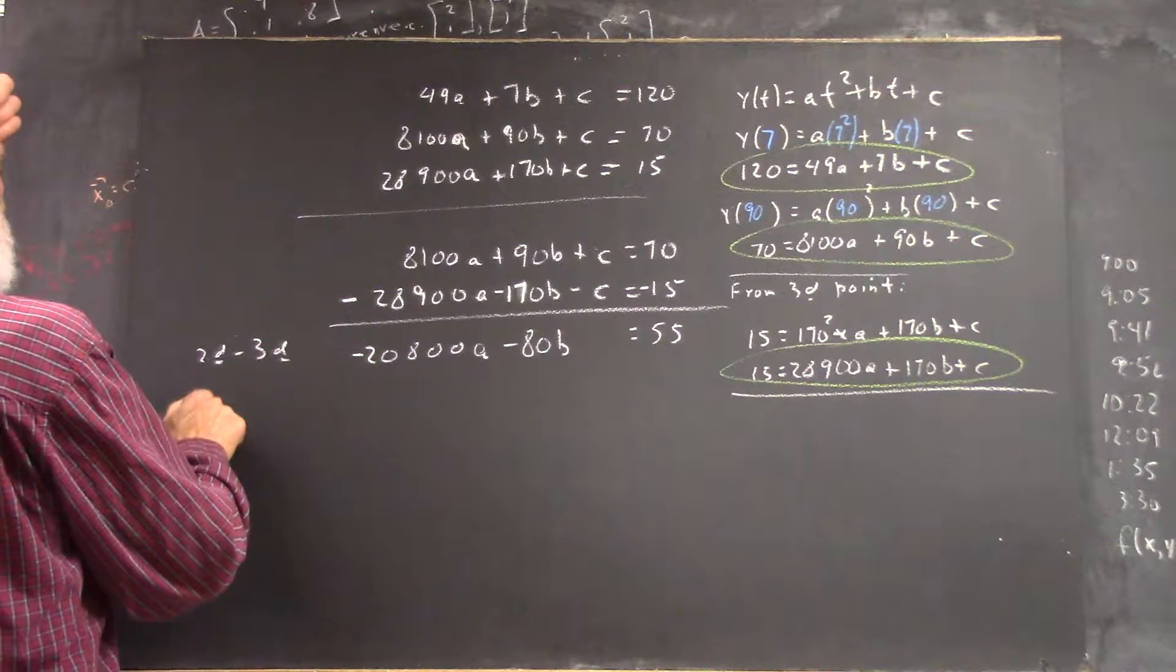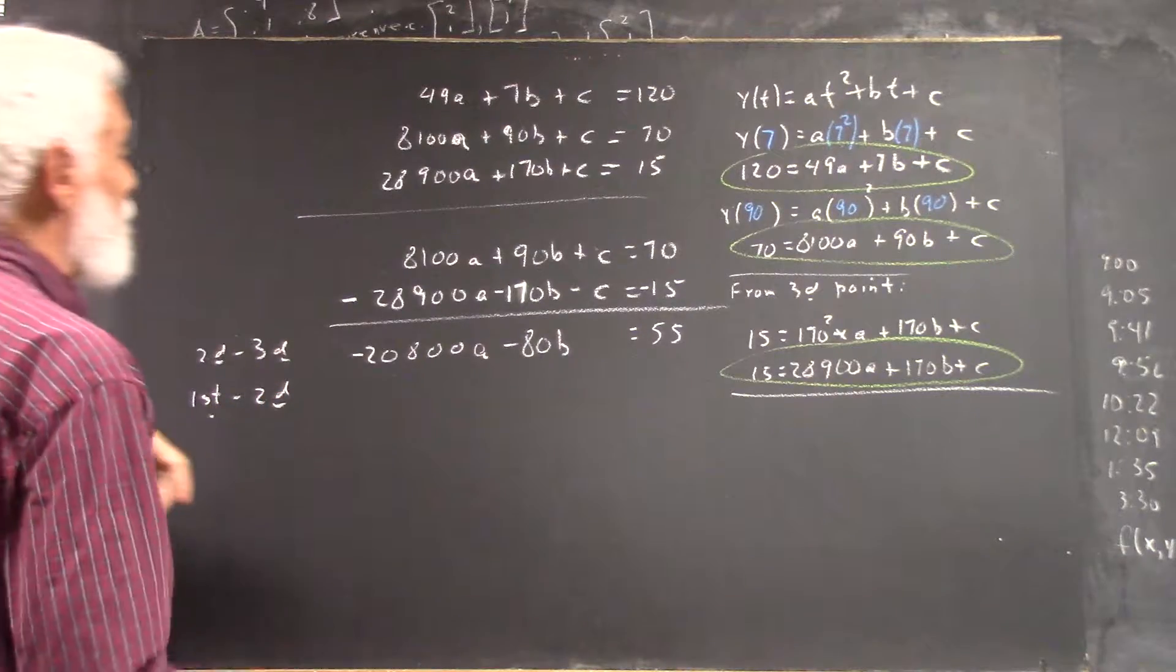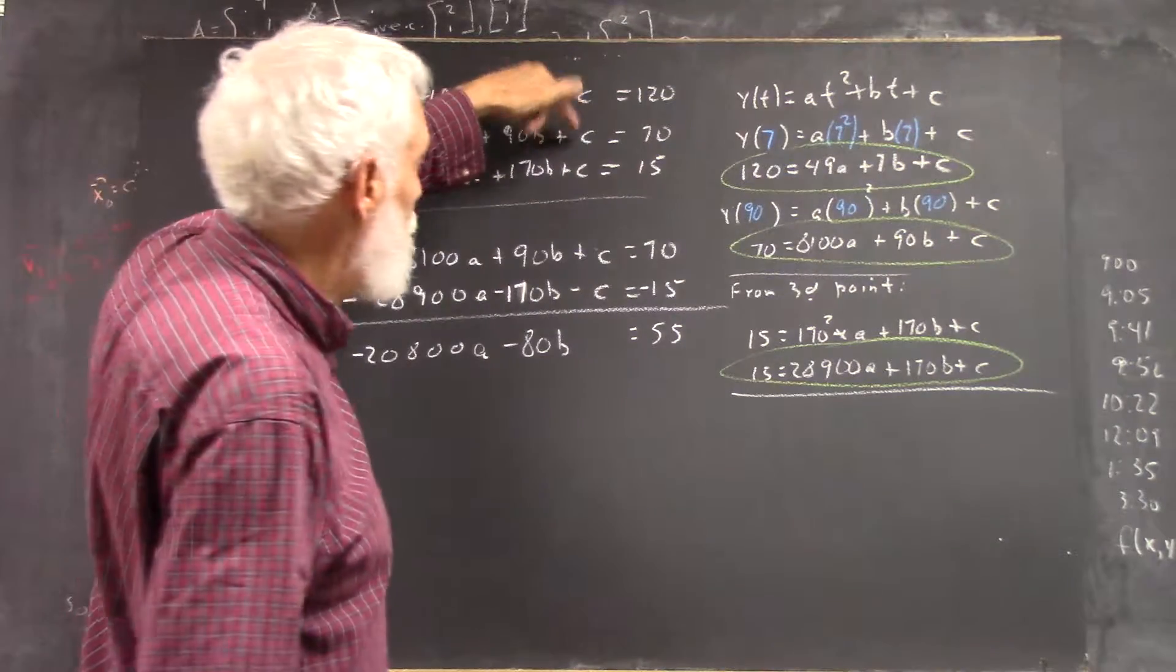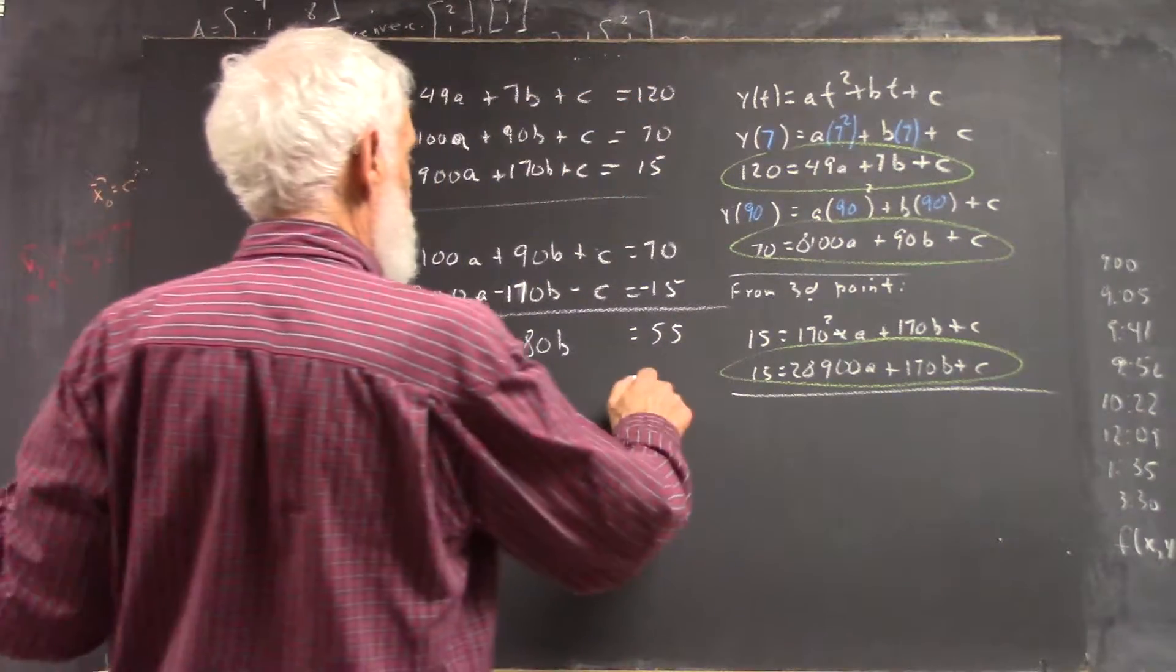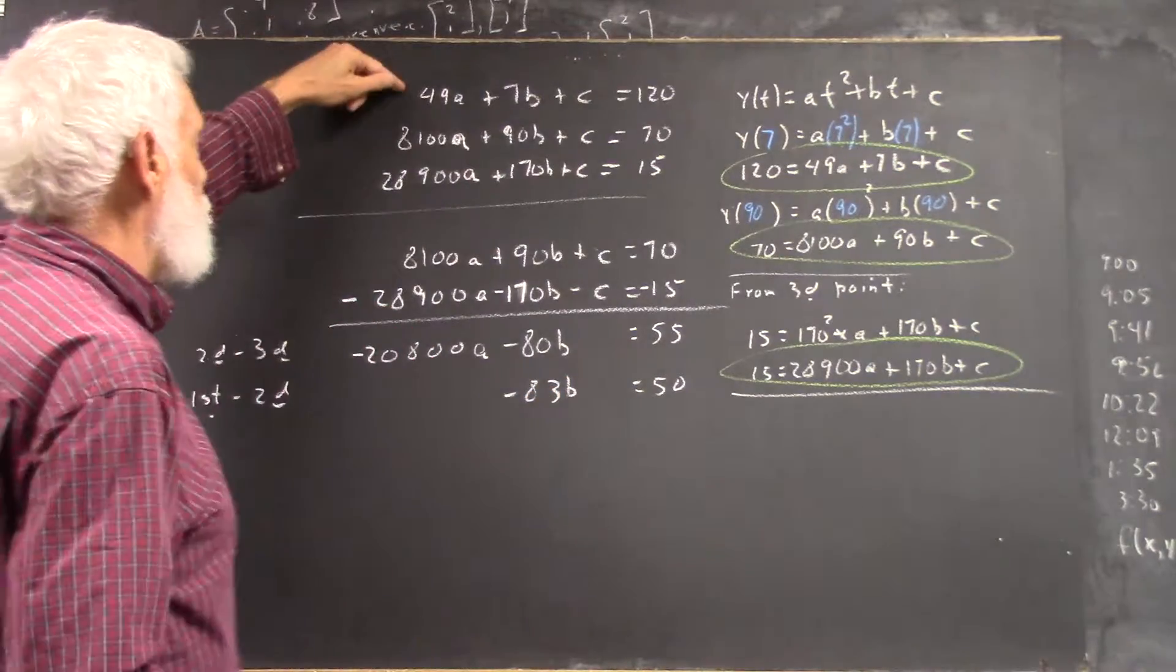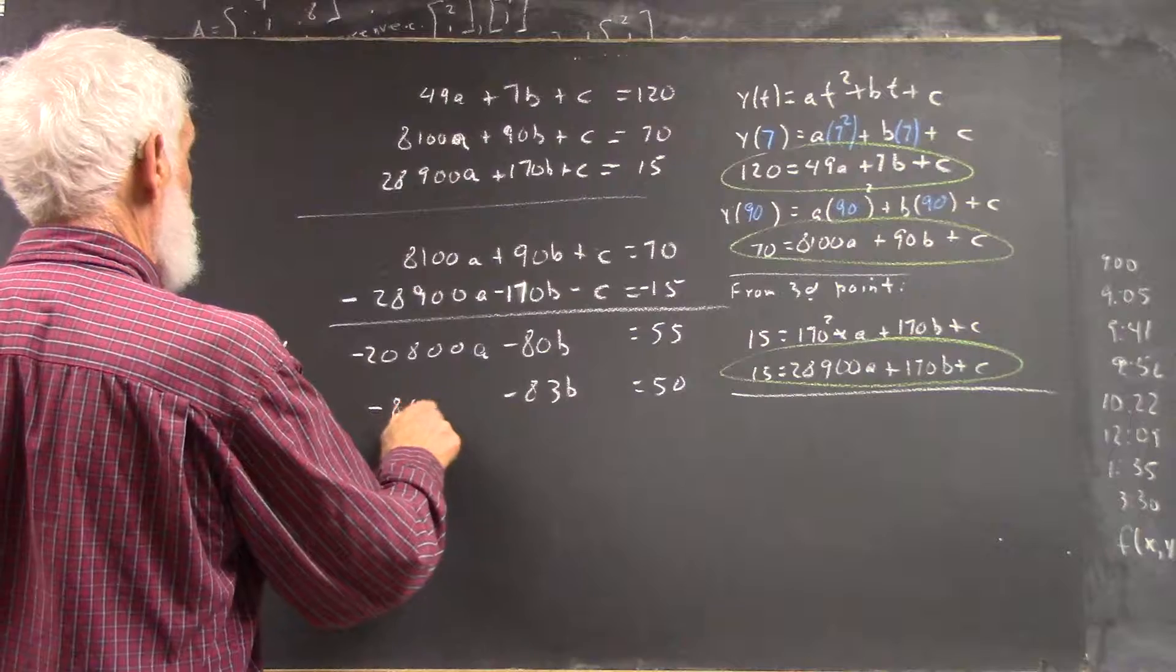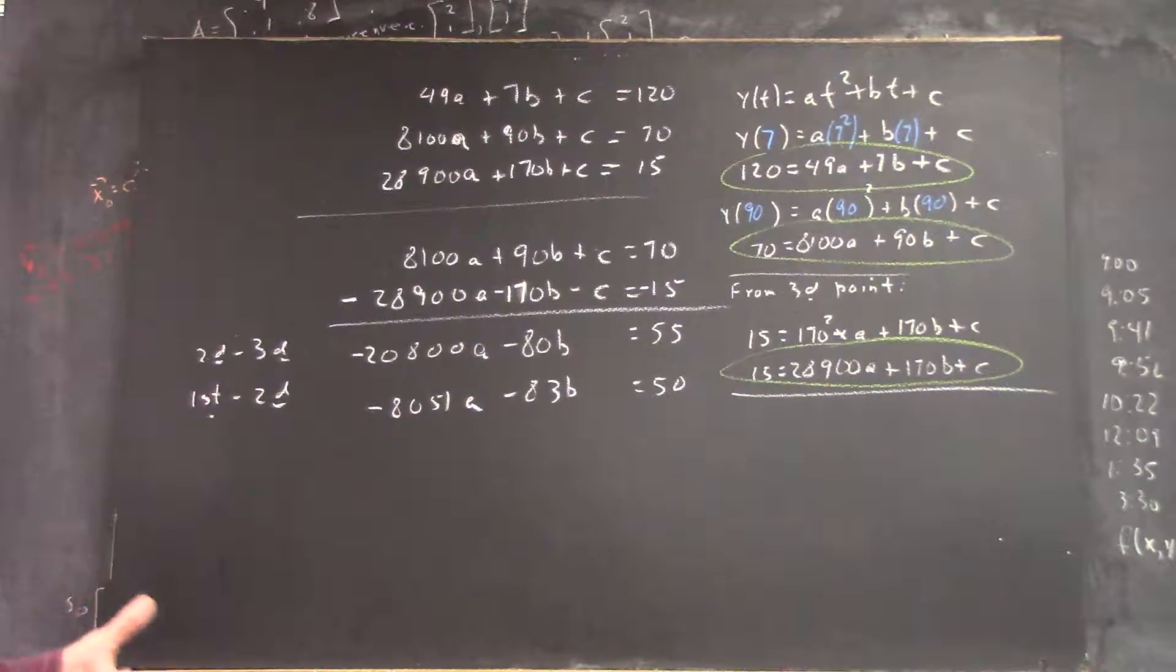Okay. Now I'll do the first equation minus the second. I'm not going to write it out. But I'm going to have C minus C, right? It's going to give me zero. 120 minus 70 is going to give me 50. 7B minus 90B is negative 83B. 49A minus 8100A is negative 8051A. Okay, so now I've got two equations, right?